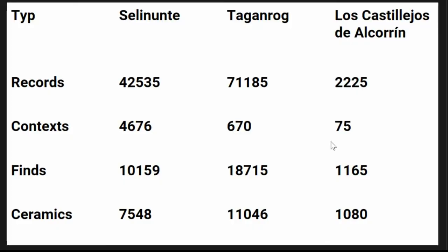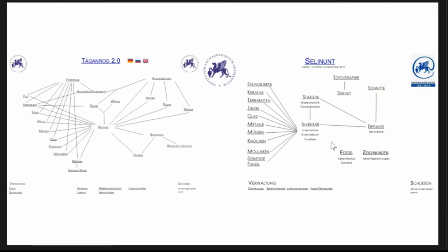Although I try to avoid most of the issues related to data integration by using databases already in IdaField with a theoretically consistent scheme, there are unfortunately still many problems within the data that have to be addressed. Just as a little overview, we are dealing with about 115,000 records. Most of them are finds, and most of the finds, of course, are ceramics.